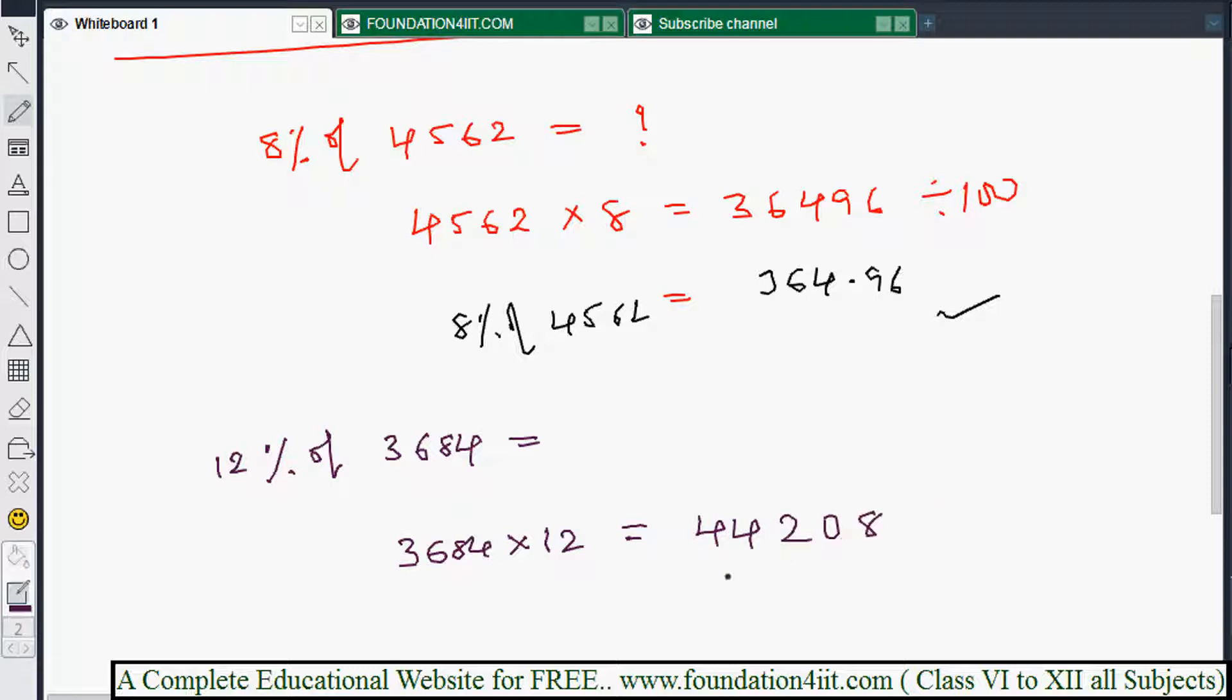Now if you want the answer, directly you can write the answer. Now 44,208, you should keep two decimal places. After that you can keep the point from the right side. This is the basic one. Now in case if the percentage values are some more big numbers, then how to do it in the simplest way I'll explain in standard form.